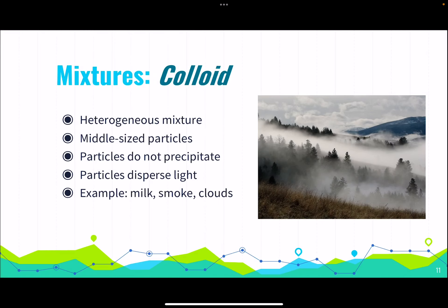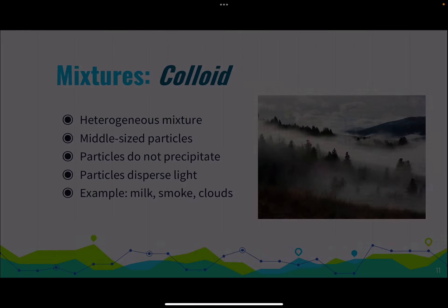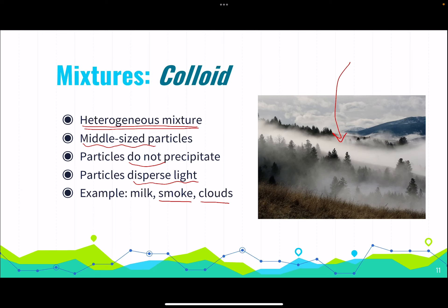Colloids are a heterogeneous mixture where we can see the difference between the parts, but the particles are middle-sized and still do not precipitate. The particles disperse light. The best examples are smoke or clouds — we can see particles of varying sizes in the clouds. What we see floating in sunlight through a window is also a colloid, but we never see those particles fall to the floor because they do not precipitate.